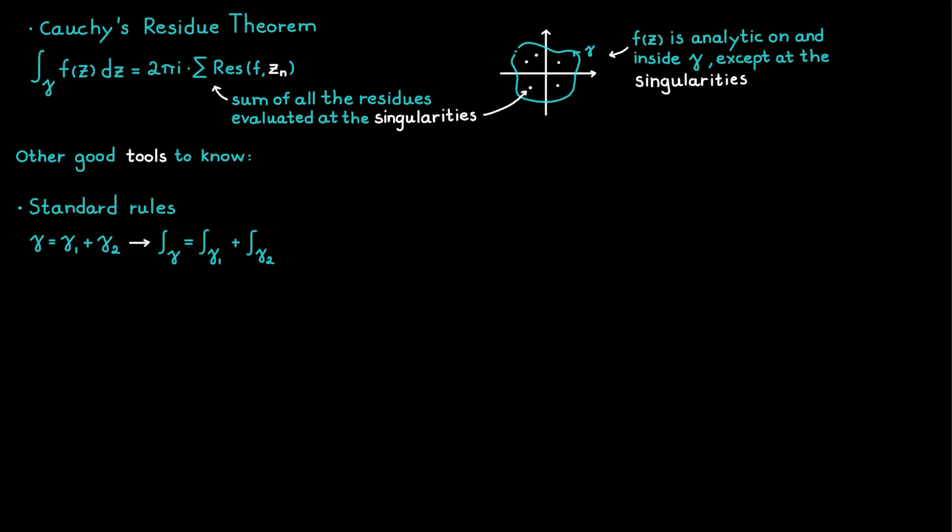And this is really useful, for example, when we try to parameterize this contour here. Because if we start by splitting it up into two lines instead, then we can just parameterize each line one at a time, which will be much easier to do than trying to find a function that describes the whole contour.